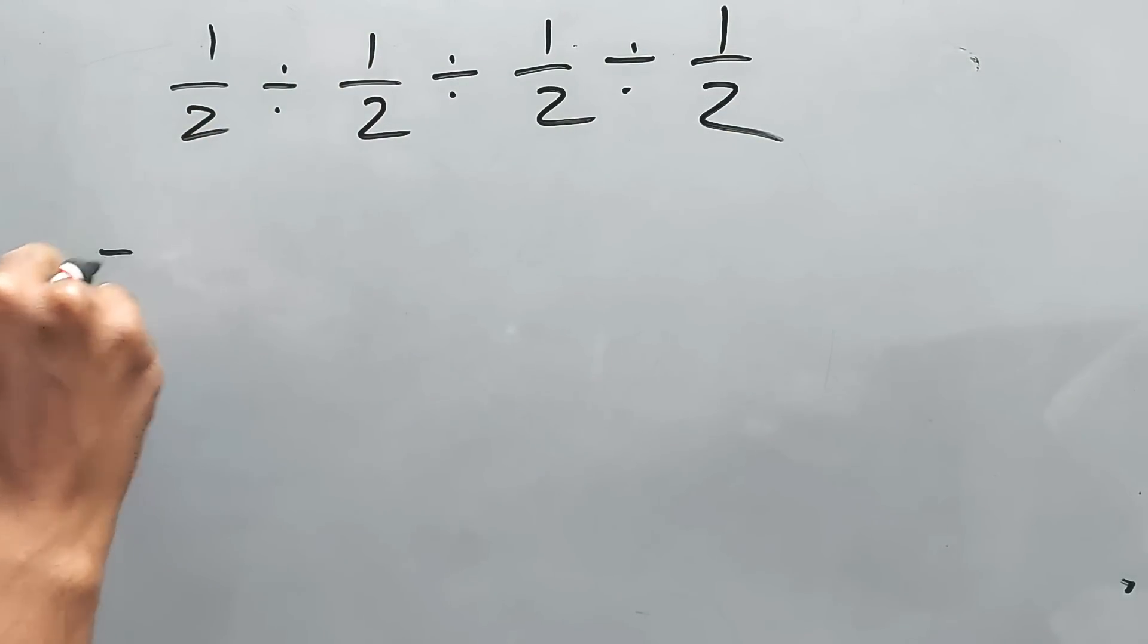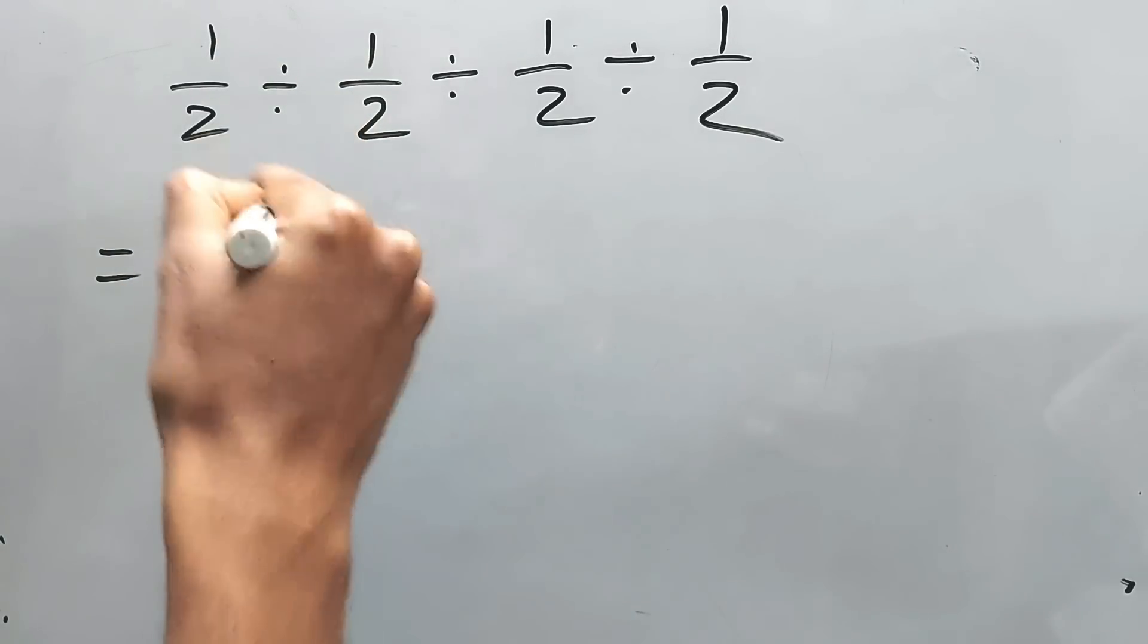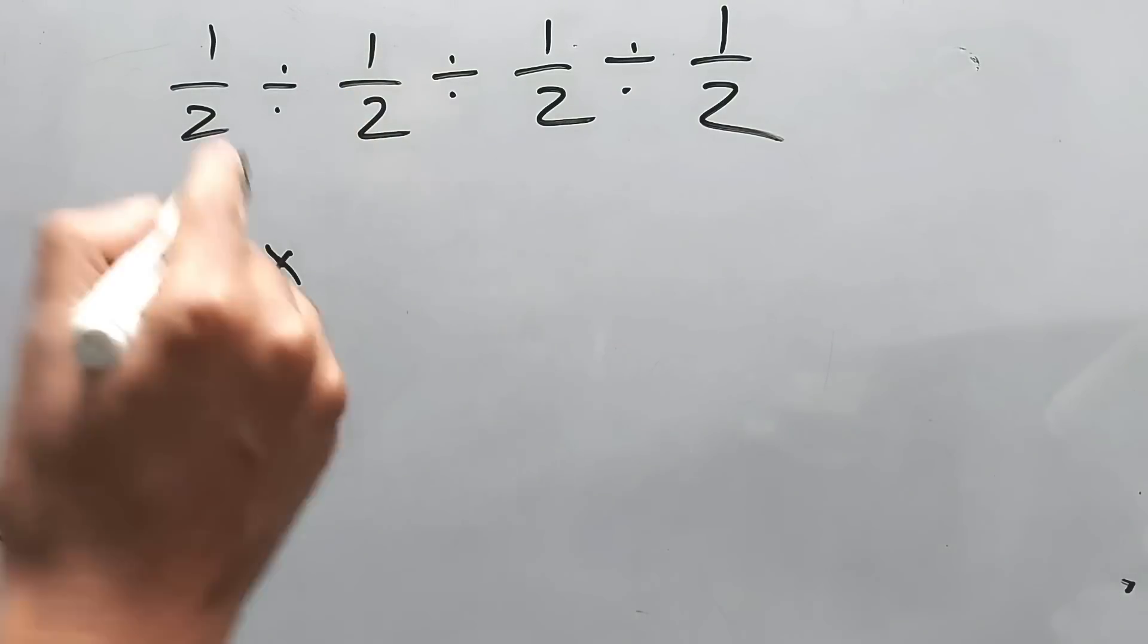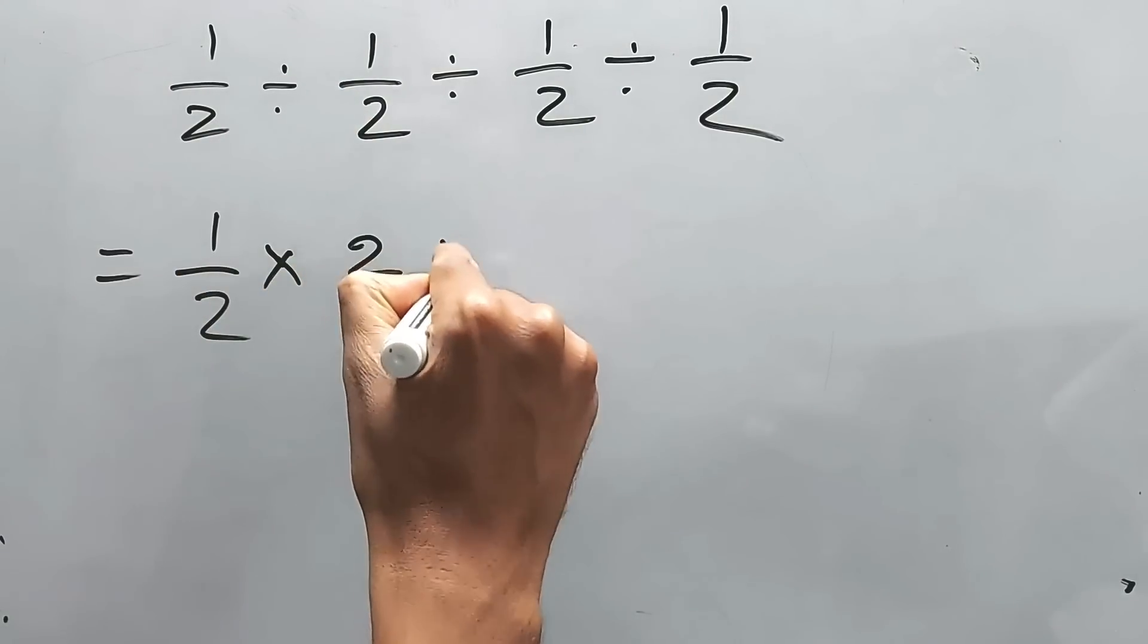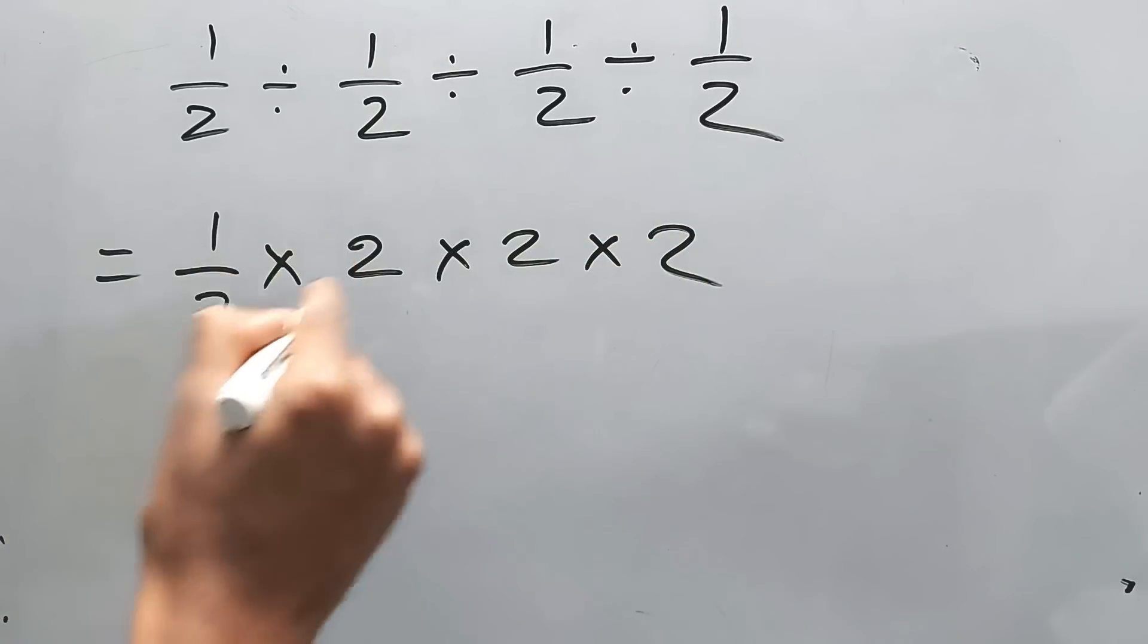Again, same thing we'll do. We'll replace this division sign by multiplication sign and use the reciprocal. That means what is the reciprocal of 1 by 2? That is 2, right? Into 2 into 2. So first 2 and 2, this 2 will be cancelled automatically. 2 into 2 is 4.